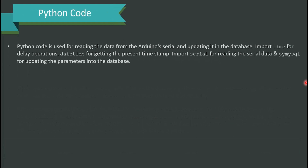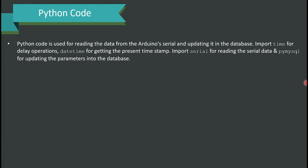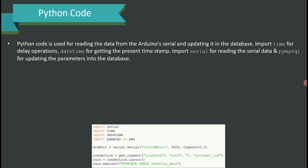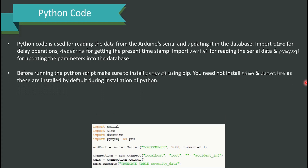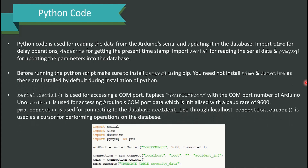The Python code reads data from the Arduino serial port and updates it in the database. Libraries used: 'time' for delay operations, 'datetime' for getting the current timestamp, 'serial' for reading serial data, and 'pymysql' for updating parameters into the database. Before running the Python script, make sure you have installed pymysql using pip. The 'time' and 'datetime' libraries do not need separate installation as they come with Python by default.